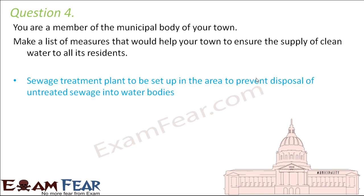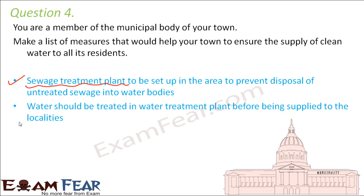A sewage treatment plant should be set up in the area to prevent disposal of untreated sewage into water bodies. The sewage treatment plant is very important because it will make the sewage less toxic. Water should also be treated in a water treatment plant so that it is purified and you get clean water for drinking.